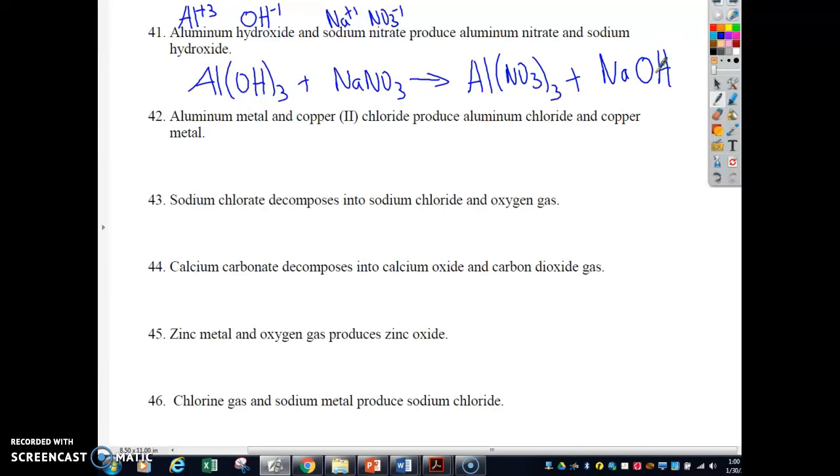Now this is one where it will be easier to balance according to the polyatomic ions. You have one aluminum, one aluminum, three hydroxides, and over here is only one, so I'm going to put a three there for three hydroxides. Now that gives me three sodium - I'll put a three there for sodium. Three nitrate, three nitrate.